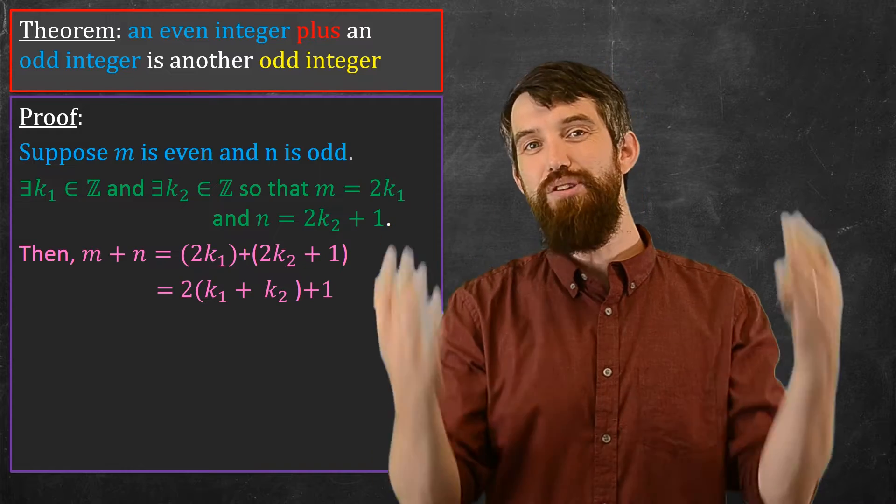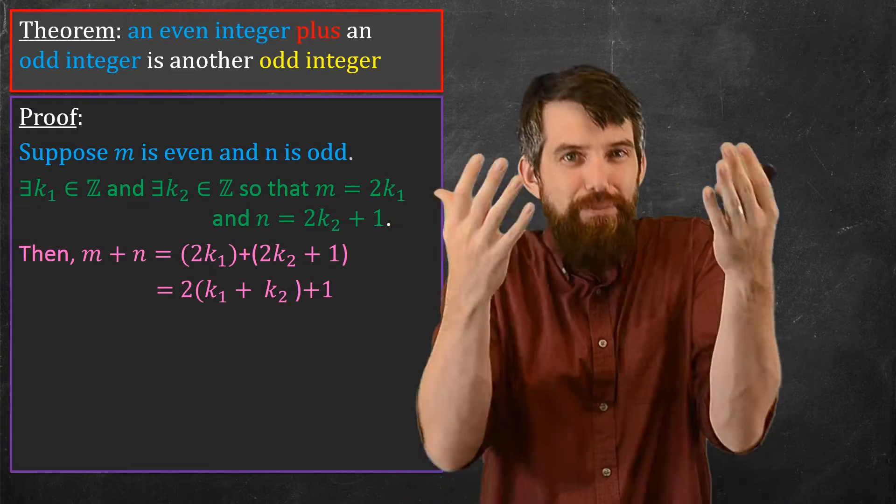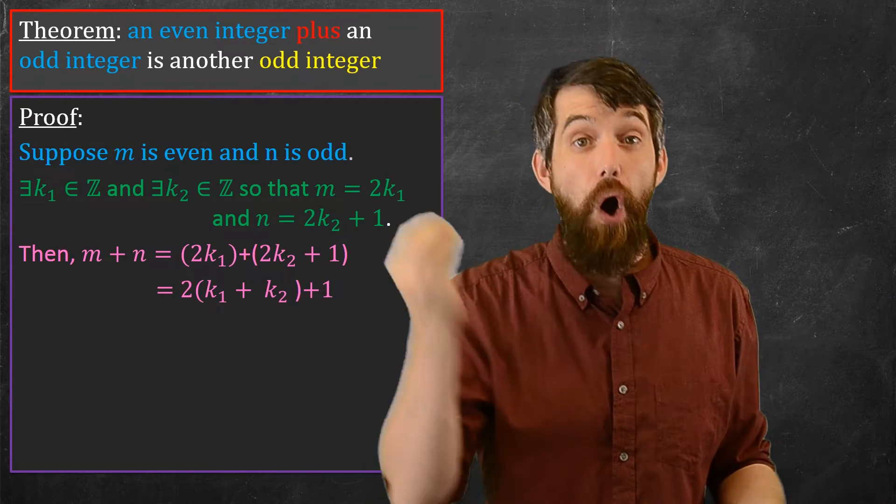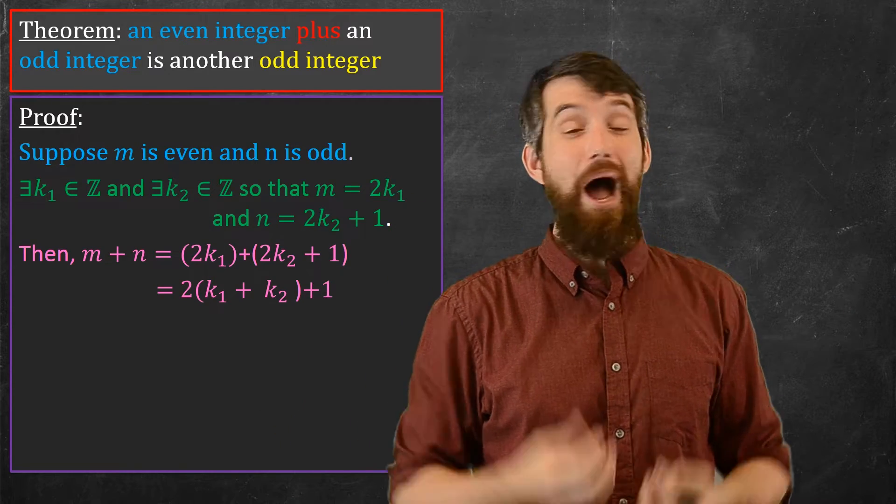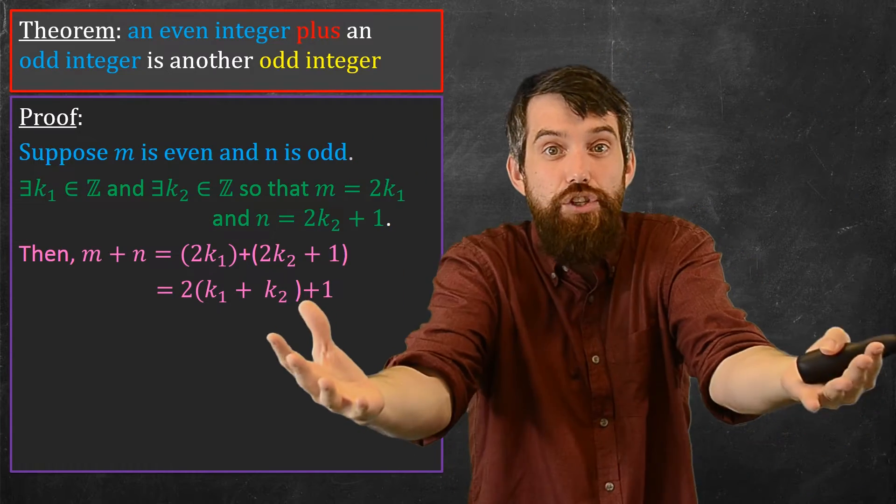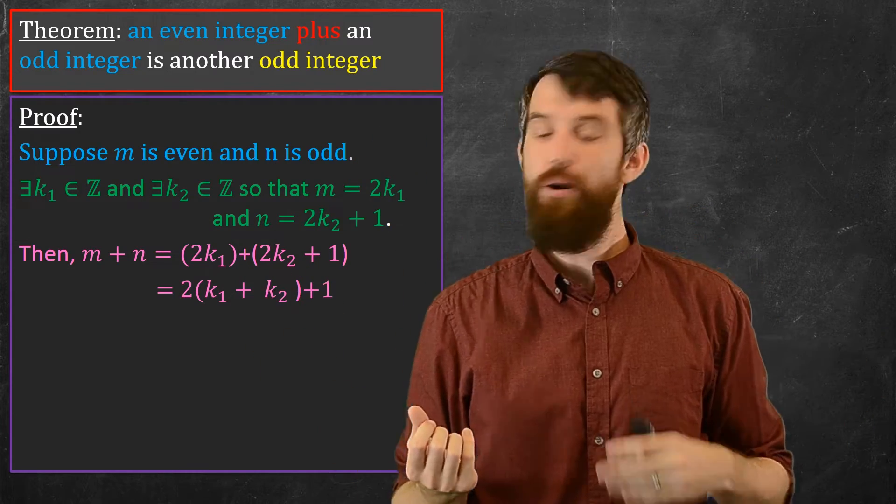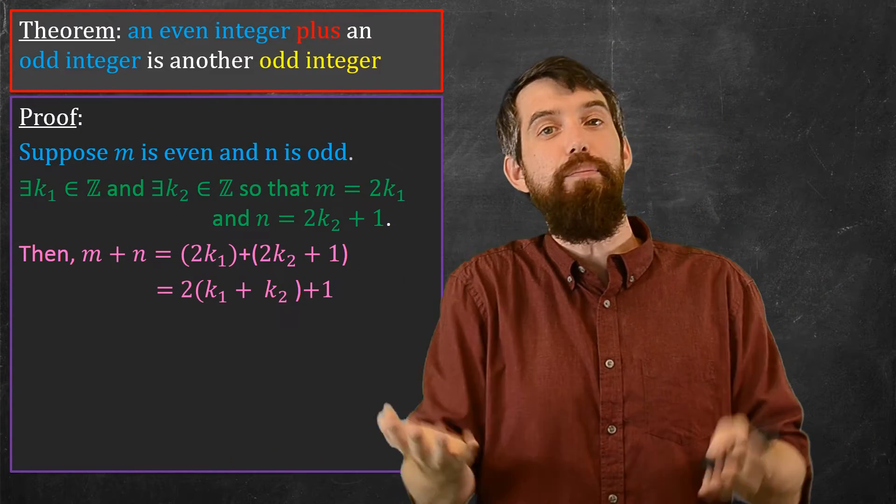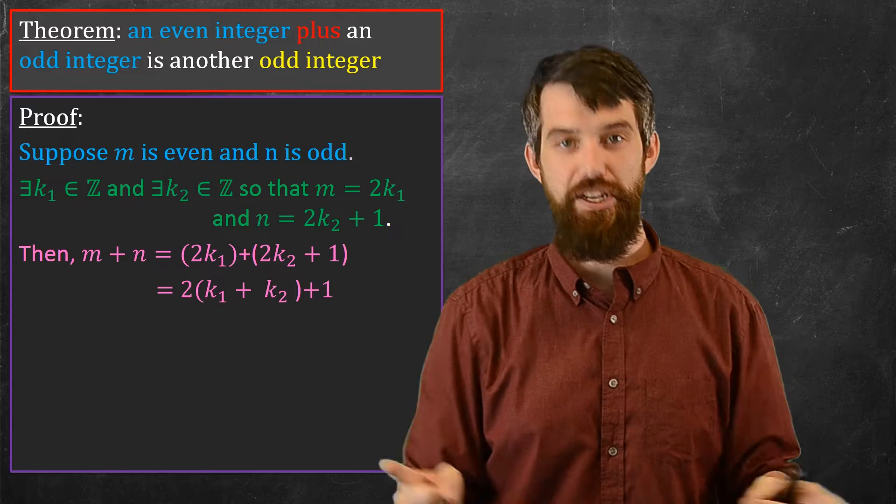Now, why did I do this little bit of algebra? What I'm trying to do, where I'm going, is that I want the sum of m plus n to be an odd integer. So I want the sum of m plus n to be written as twice an integer plus 1. Well, it sort of is. It's written as twice something plus 1. The something is k1 plus k2.